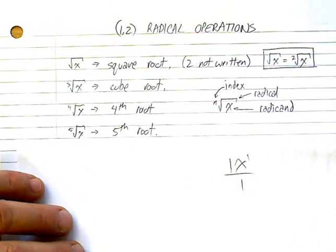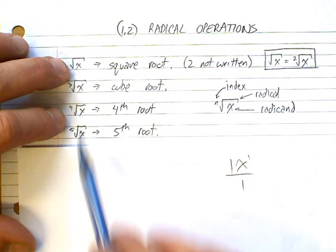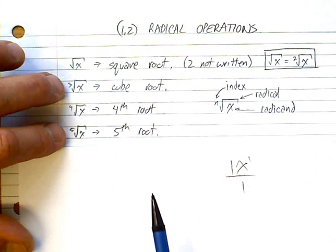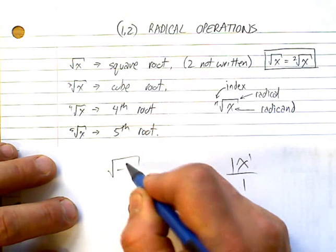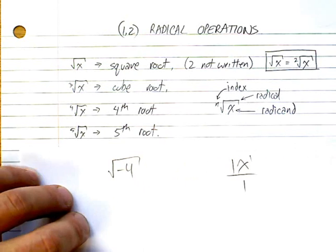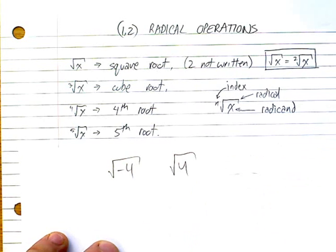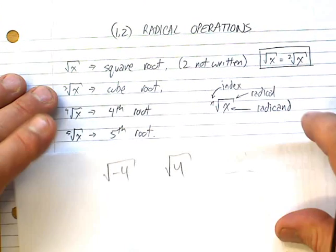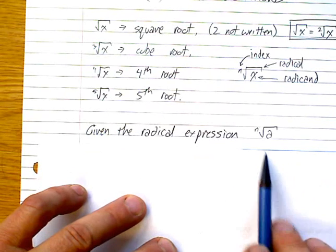Before dealing with specific rules, we have to understand and distinguish between even and odd indexes, because for example you cannot take the square root of negative four, but you can take the square root of positive four. These distinctions also apply to higher indexes. So let's look at what happens with an expression where n is the index and a is the radicand.